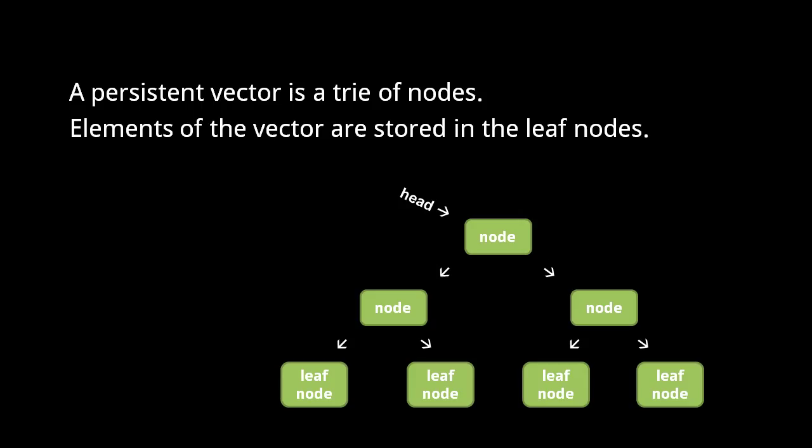It works out that looking up an element at a particular index is a big O log N operation, which is much better than big O N. And because each node stores up to 32 child nodes or elements, the lookup operation is actually log base 32 N, which in practice makes lookup operations nearly as good as big O 1 constant time.